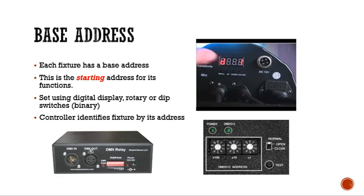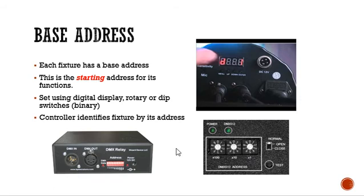When you get a fixture, one of the very first things you have to do is set a base address. Each fixture has a base address, which is the starting address for its functions. We set it using digital displays — here's an example where you'll have the letter D and then set a number from 0 to 512, because there are 512 addresses in the universe. We also have rotary options where you put a screwdriver in and select the number, and dip switches where you set a binary number to indicate the starting address.